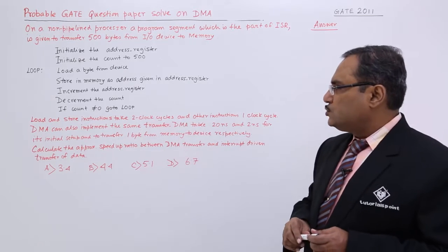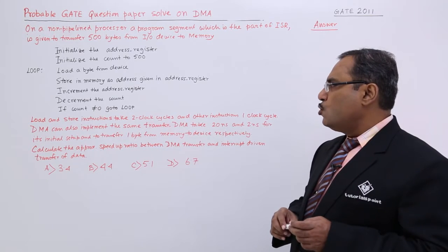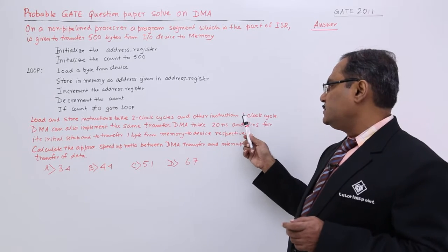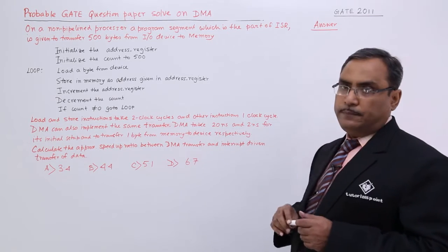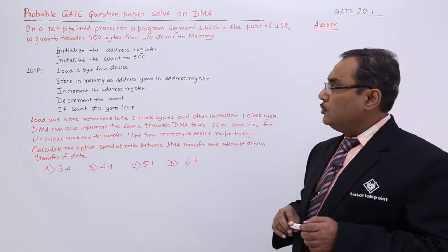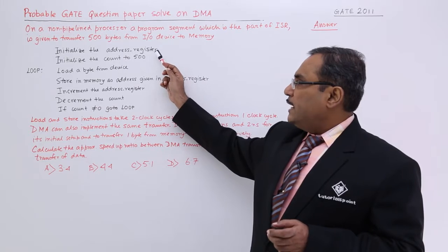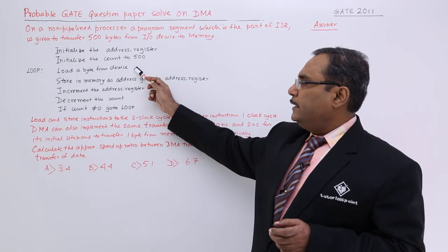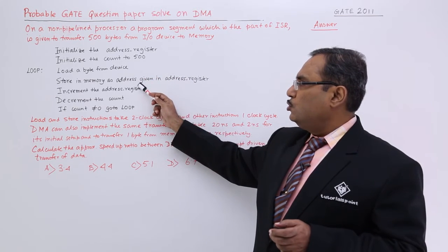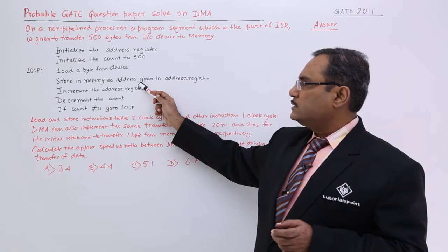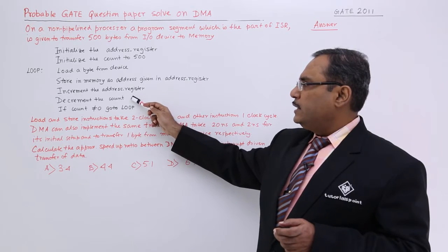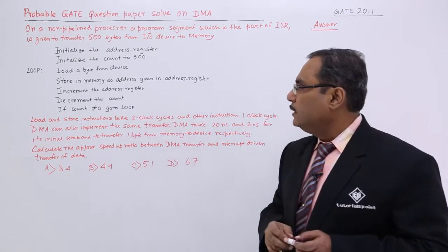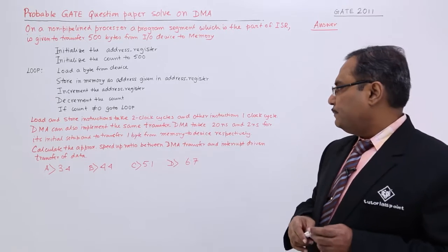Load and store instructions take 2 clock cycles, and all other instructions take 1 clock cycle. So: initialize takes 1, initialize takes 1, load takes 2, store takes 2, increment takes 1, decrement takes 1, and the branch/if check takes 1 clock cycle.